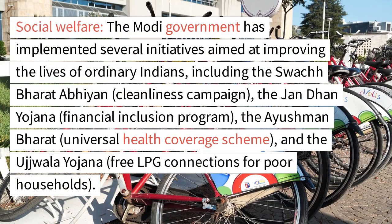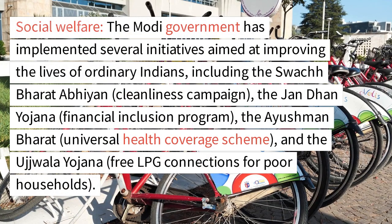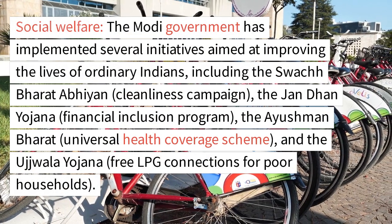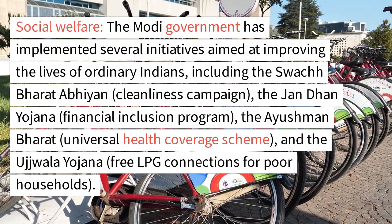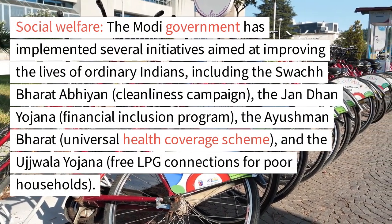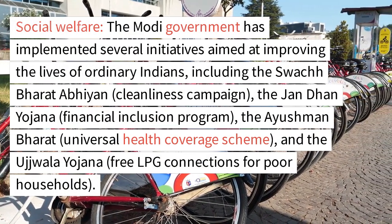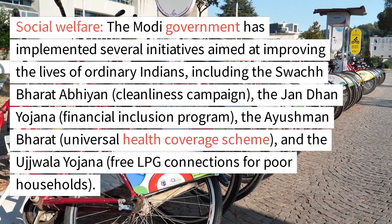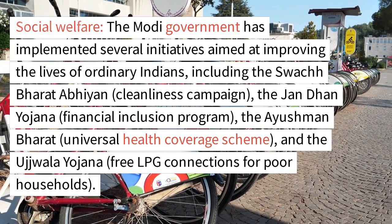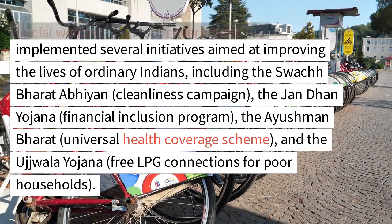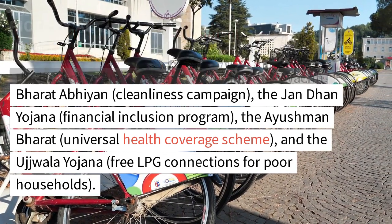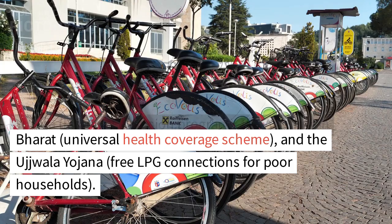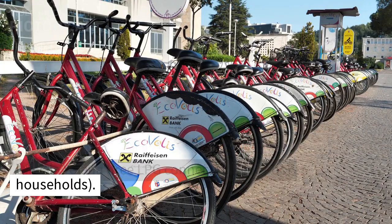Social Welfare. The Modi government has implemented several initiatives aimed at improving the lives of ordinary Indians, including the Swachh Bharat Abhiyan (Cleanliness Campaign), the Jan Dhan Yojana (Financial Inclusion Program), the Ayushman Bharat (Universal Health Coverage Scheme), and the Ujwala Yojana (Free LPG Connections for Poor Households).